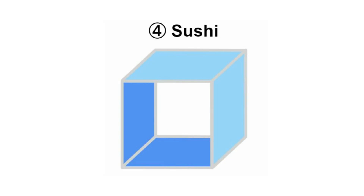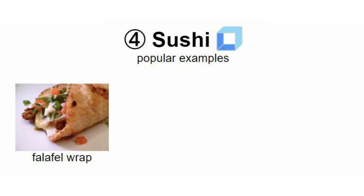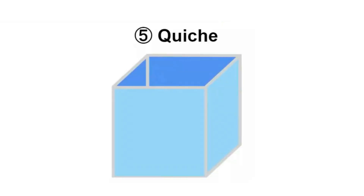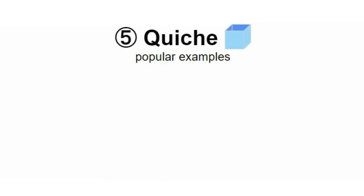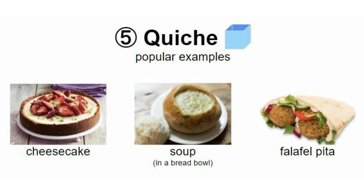Number four — sushi, where you have starch wrapping around all four sides except for the back and the front. Popular examples include the falafel wrap, pigs in a blanket, and enchilada. I guess that's a sushi. Number five — quiche, which has the bottom covered and all four sides except for the top — five out of six sides. Popular examples: cheesecake, soup in a bread bowl, falafel pita.